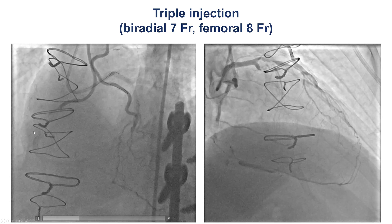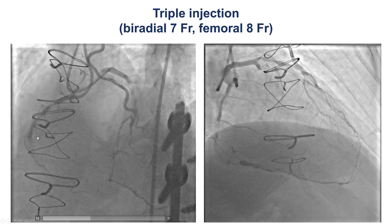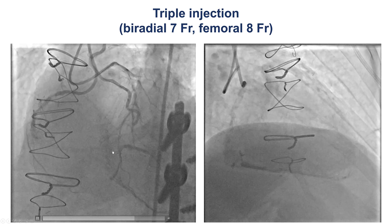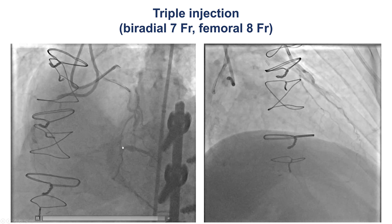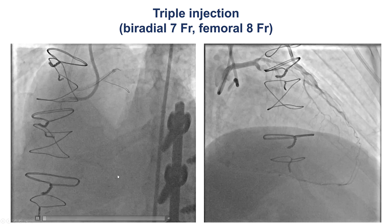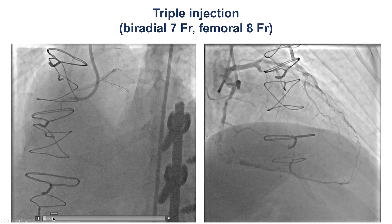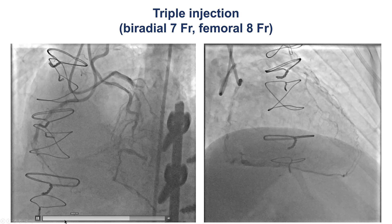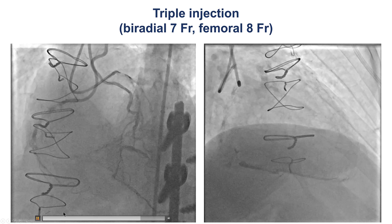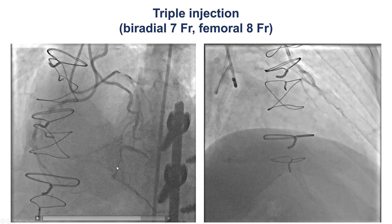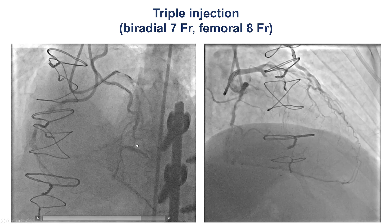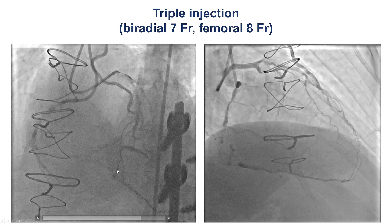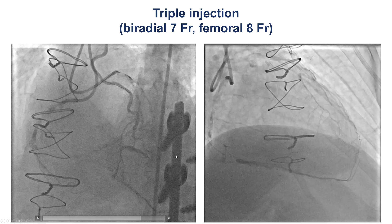What we have is an RCA CTO, then a long segment of occlusion going all the way to the posterior lateral and to the PDA. The connecting segment between the PDA and the posterior lateral is a portion of a skip graft — that was part of the sequential vein graft. It now supplies the PDA through the right posterior lateral branch.